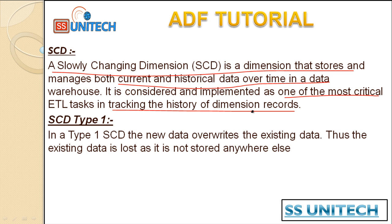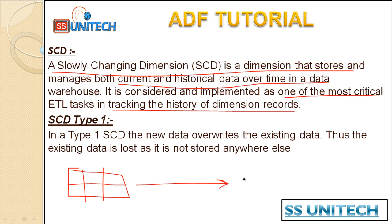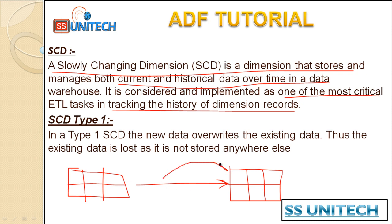In SCD Type 1, the new data overrides the existing data, so the existing data is lost and not stored anywhere else. If we load item information into the destination, on the next load we check whether the data already exists. If it does, no action is needed; if not, we insert. If a record is updated at the source, we update it in the destination. This is SCD Type 1.